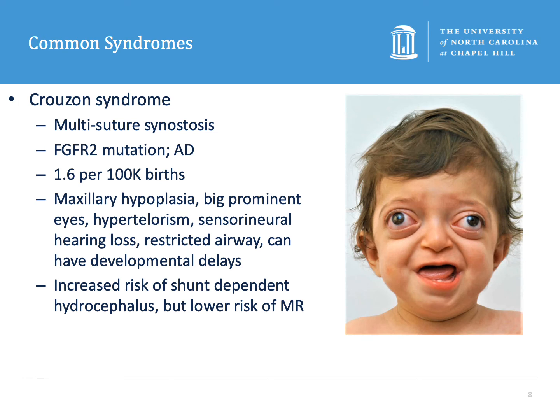Let's talk about some of the more common genetic multi-suture synostosis syndromes. The first is Crouzon syndrome — a sporadic autosomal dominant FGFR2 mutation occurring in 1.6 per 100,000 births. It's characterized by maxillary hypoplasia, proptotic eyes, hypotelorism, sensorineural hearing loss, restricted airway, and developmental delays. There's an increased risk of shunt-dependent hydrocephalus in these patients, but interestingly there is a lower rate of mental retardation compared to other craniofacial syndromes.